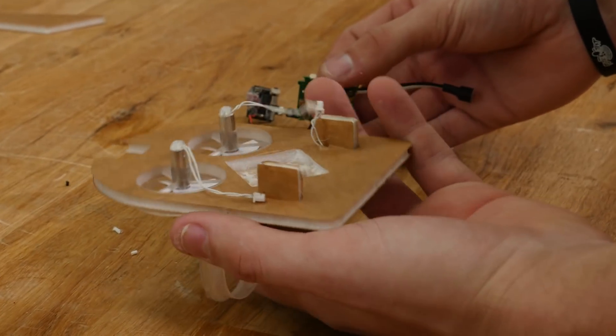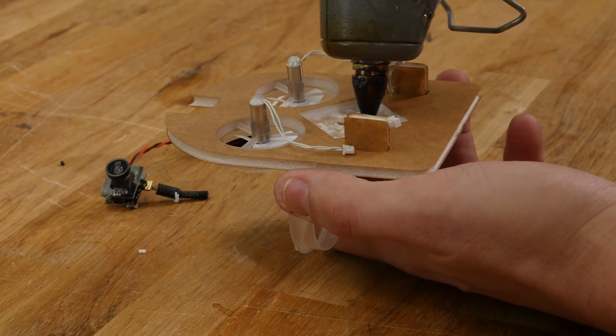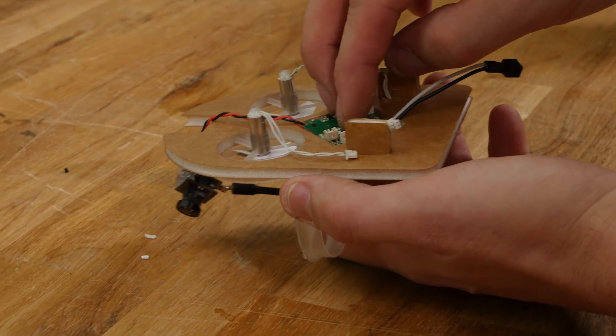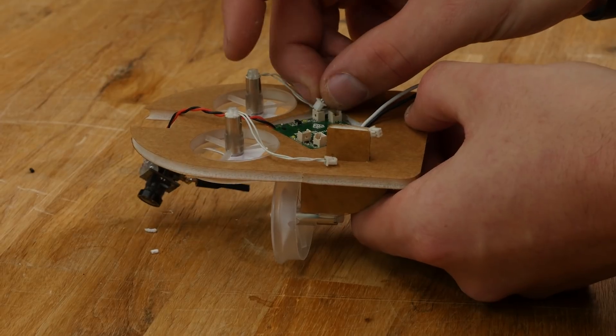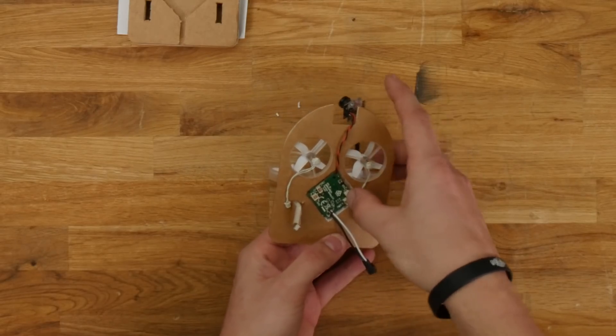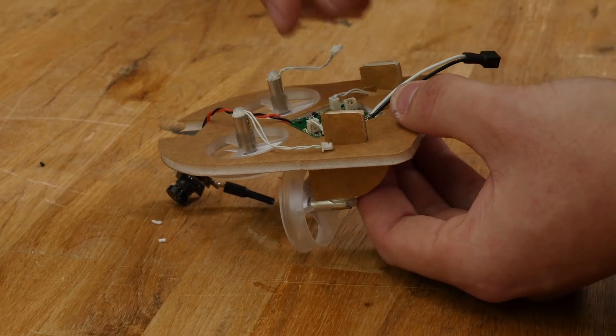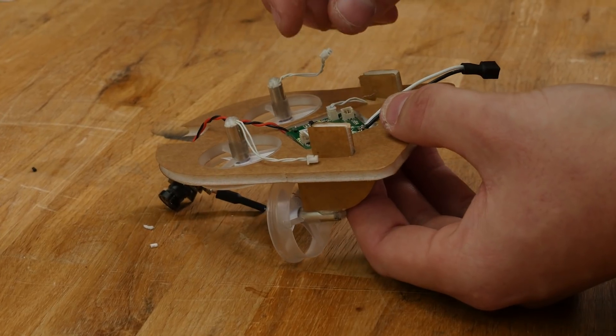Take your flight controller and camera assembly, and you're going to glue it right in the space provided. Take your rear motor connectors and plug them into the front of the board. And take your front motor connectors and plug them into the back of the board.